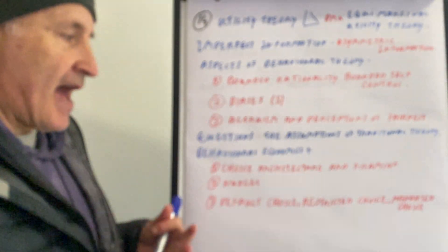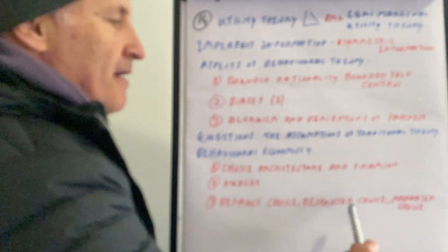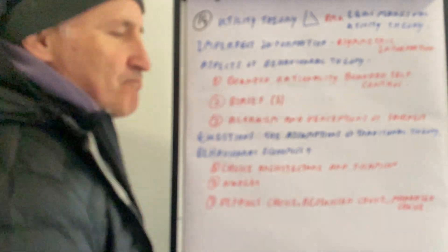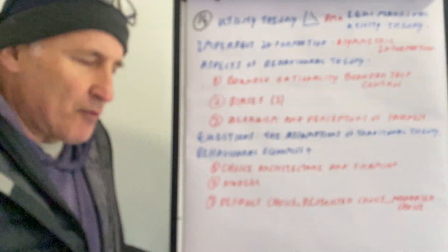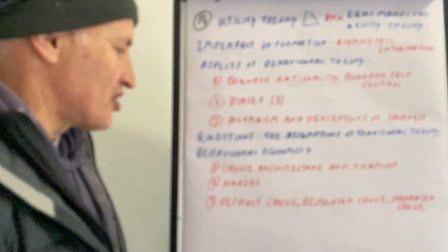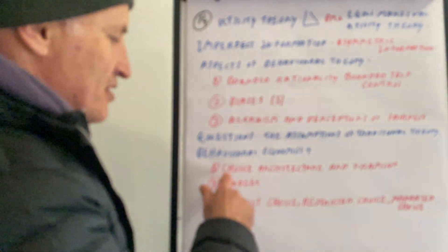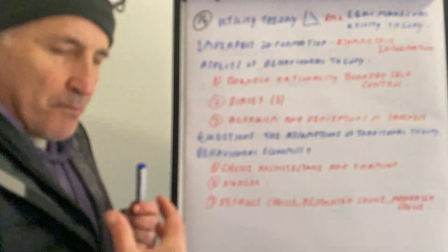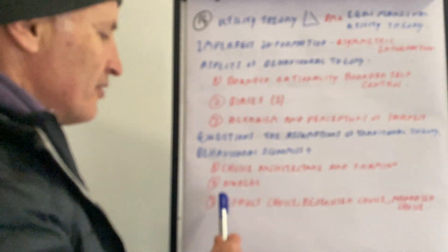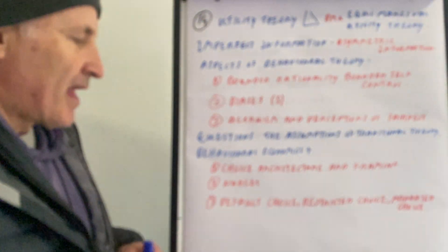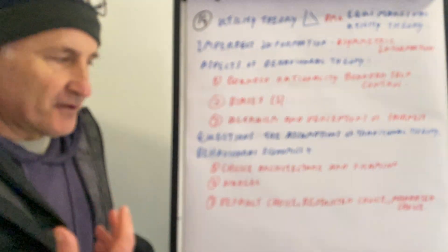Behavioral economics questions the assumptions of traditional economic theory. So therefore we have choice architectures and framing. Framing is trying to get the context right when you make a decision; choice architecture is trying to push you into making the right decision — nudges.